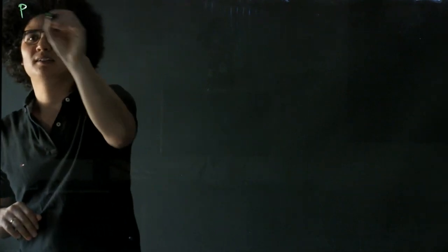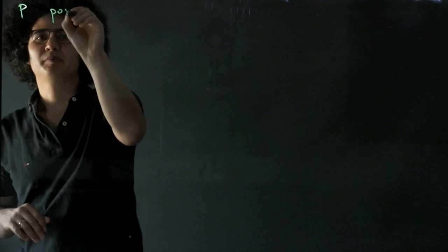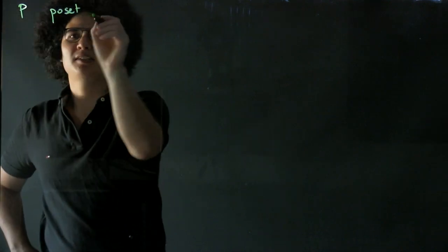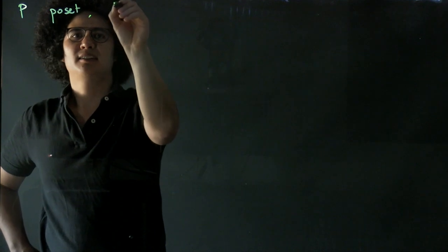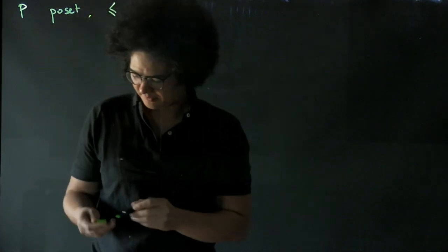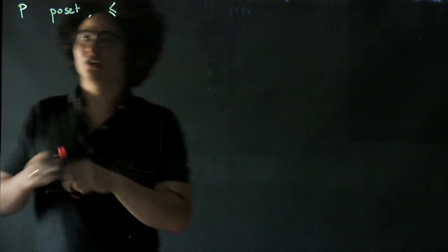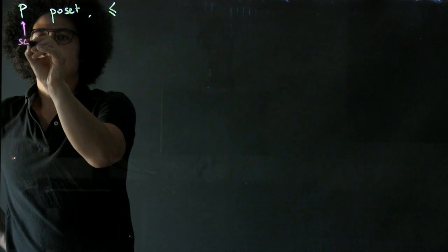So first we're going to start with a poset category. So we'll let P be a poset. So what does that mean? That means that P is a set and it has some relation on it. The relation is a partial order. So this is a set.